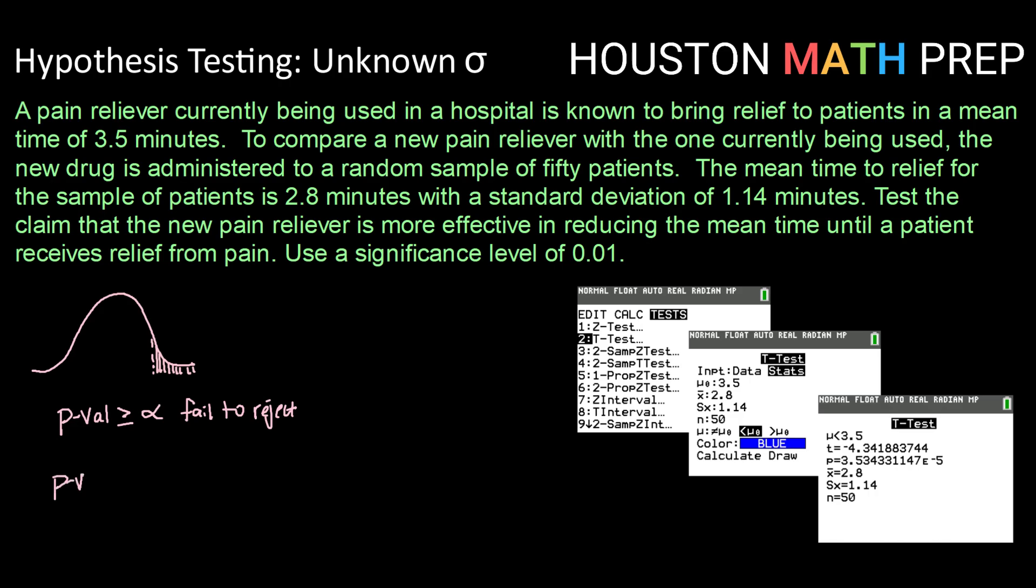But if we get a very small p-value, a p-value that is less than our alpha, then that means the probability of getting a sample like we did with a true null hypothesis is very small, meaning that that null hypothesis is unlikely to be true, so we are going to reject it. So let's run this particular hypothesis test and see which scenario we end up in.